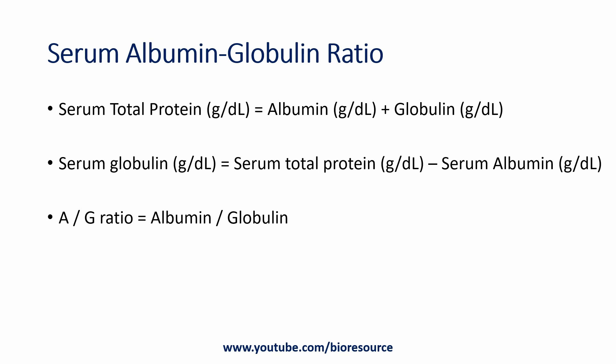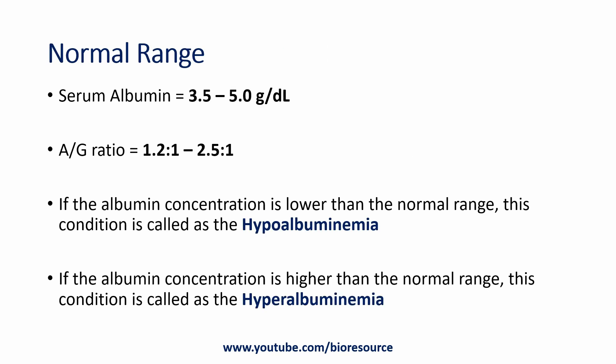Now, regarding the serum albumin-to-globulin ratio: serum total protein contains albumin and globulin. To calculate serum globulin, subtract the serum albumin concentration from the serum total protein concentration. The albumin-to-globulin ratio (A/G ratio) is then derived by dividing the albumin concentration by the globulin concentration.